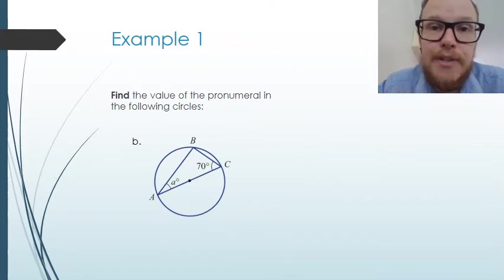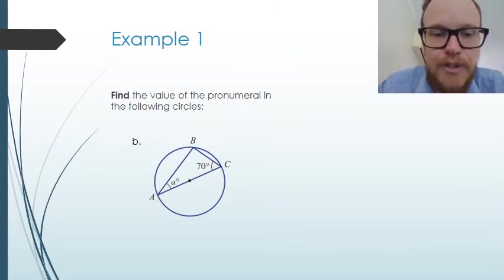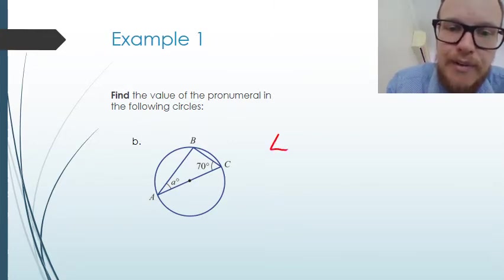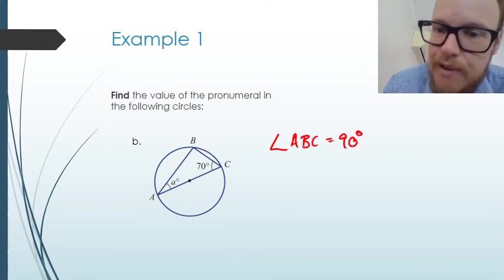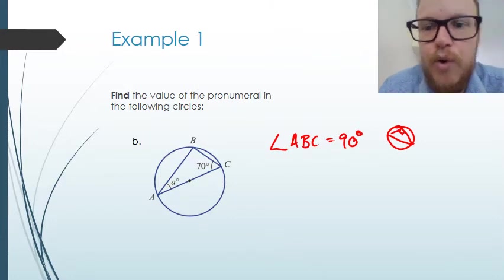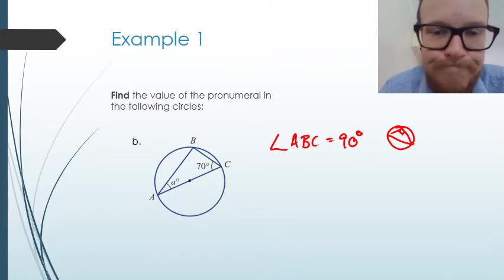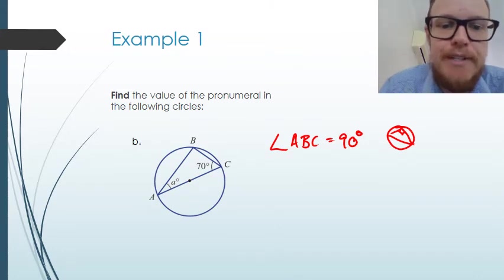Let's look at the next circle — we have the special case of the other theorem. We know that angle ABC is going to be 90 degrees because of theorem 2. We can draw our coded reason or write circle theorem 2 as our reason.